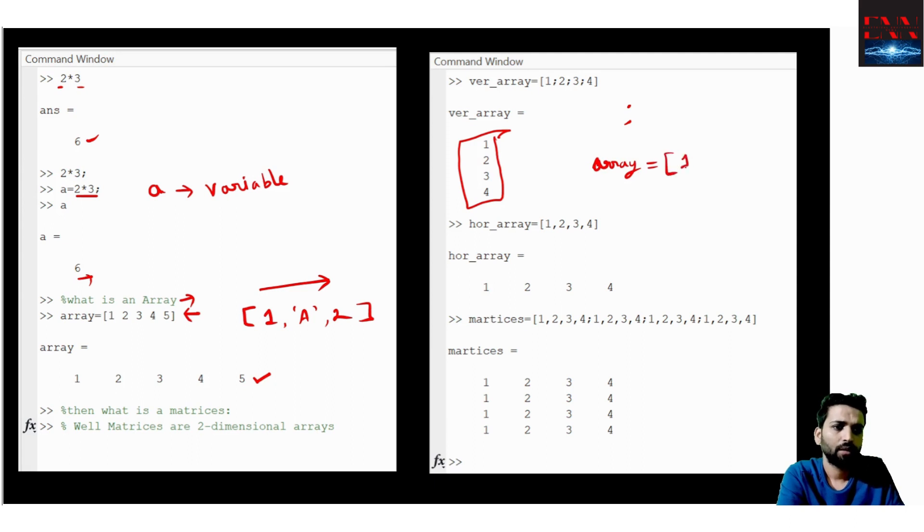I have used 1. If instead of space, I will be putting semicolon, 2, semicolon, 3, semicolon, 4. Then the array would be looking like this, looking like 1, 2, 3, 4 vertically instead of horizontally. If we use a combination of space and semicolon, we can make a matrices.